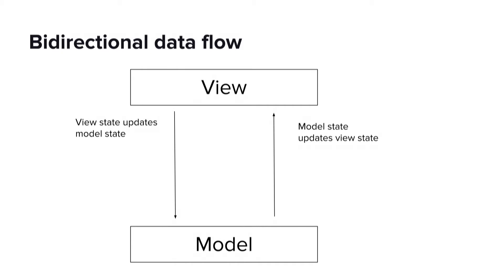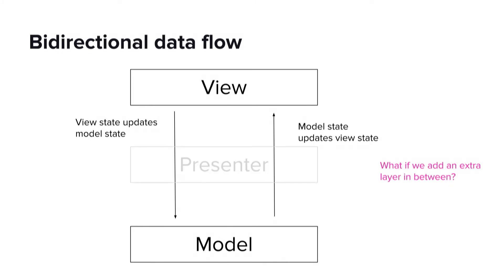This architecture by itself seems a little naive. It seems like it's hard to test because the view deals with Android widgets, which are hard to test with unit tests. So what happens if we add a third layer, which is the presenter? The presenter helps a little because it allows us to take some of the business logic in the view and move it into Java-only files that can be unit tested. However, it's actually not going to prevent us from running into the problems that we'll get from maintaining application state in two different layers.